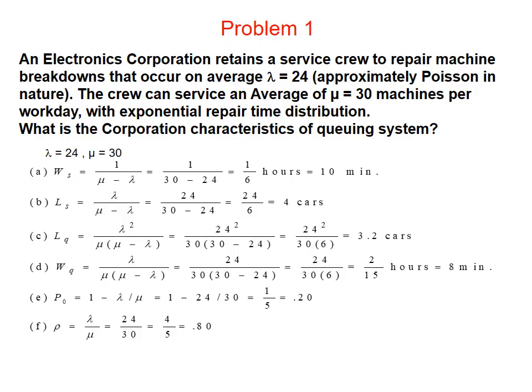Problem 1. An electronic corporation retains a service crew to repair machine breakdowns that occur on average lambda equals 24 machines per workday, approximately Poisson in nature. The crew can service an average of mu equals 30 machines per workday with exponential repair time distribution. Lambda equals 24, mu equals 30. Ws, the average time a car spent in the system, equals 1 over (mu minus lambda) equals 1 over (30 minus 24) equals 10 minutes.